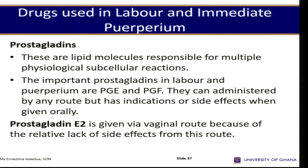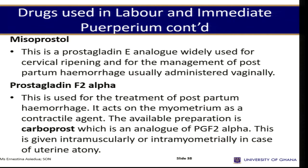Prostaglandins are lipid molecules responsible for multiple physiological subcellular reactions. The important prostaglandins in labor and puerperium are PGE and PGF. Prostaglandin E2 is given via the vaginal route because of the relative lack of side effects from that route, and it causes dilatation of the cervix. Misoprostol is another important discovery — it is a prostaglandin E analog widely used for cervical ripening and for the management of postpartum hemorrhage, usually administered vaginally or rectally. Two tablets given rectally after delivery have been found to prevent postpartum hemorrhage.